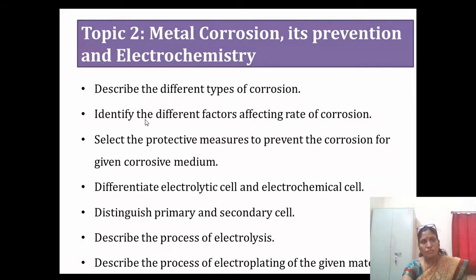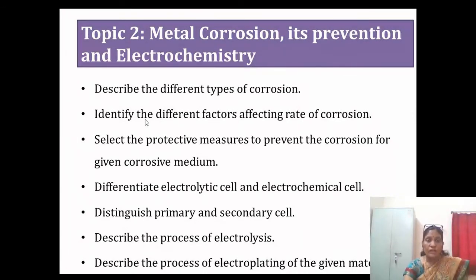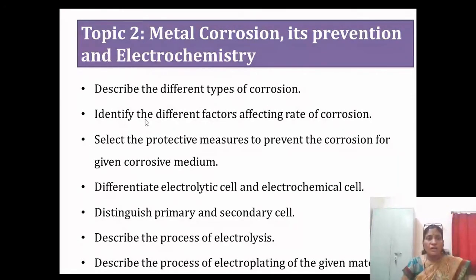The second topic is metal corrosion prevention and electrochemistry. As our country is losing 200 crore rupees every year due to corrosion, this topic is included in the course to address that problem. After completing this topic, learners can describe types of corrosion, identify factors affecting the rate of corrosion, and learn protective measures for a given corrosion medium. They can differentiate electrolytic cells from electrochemical cells, distinguish primary and secondary cells, and describe the process of electrolysis and its application such as electroplating to prevent corrosion.